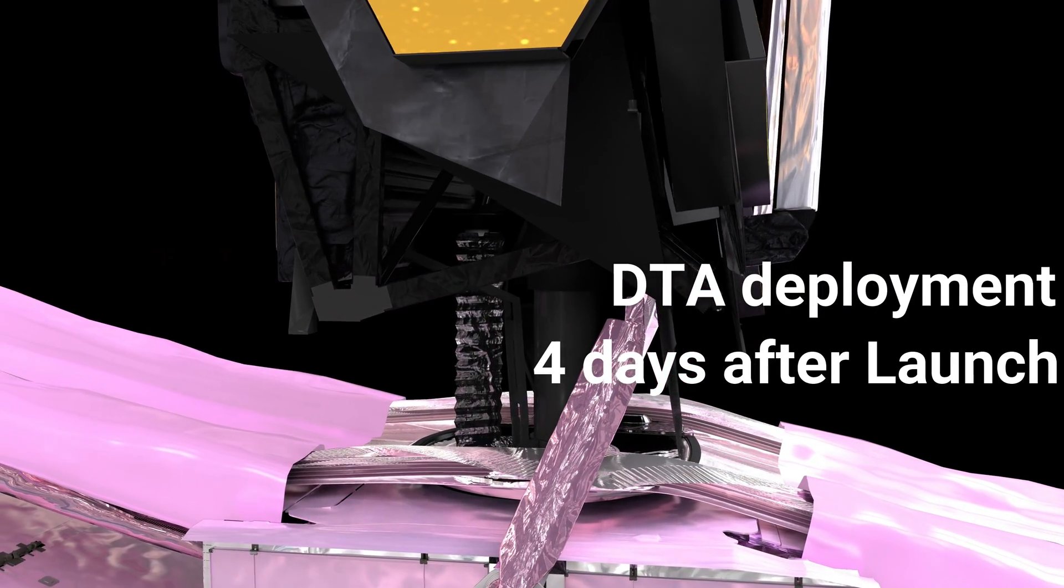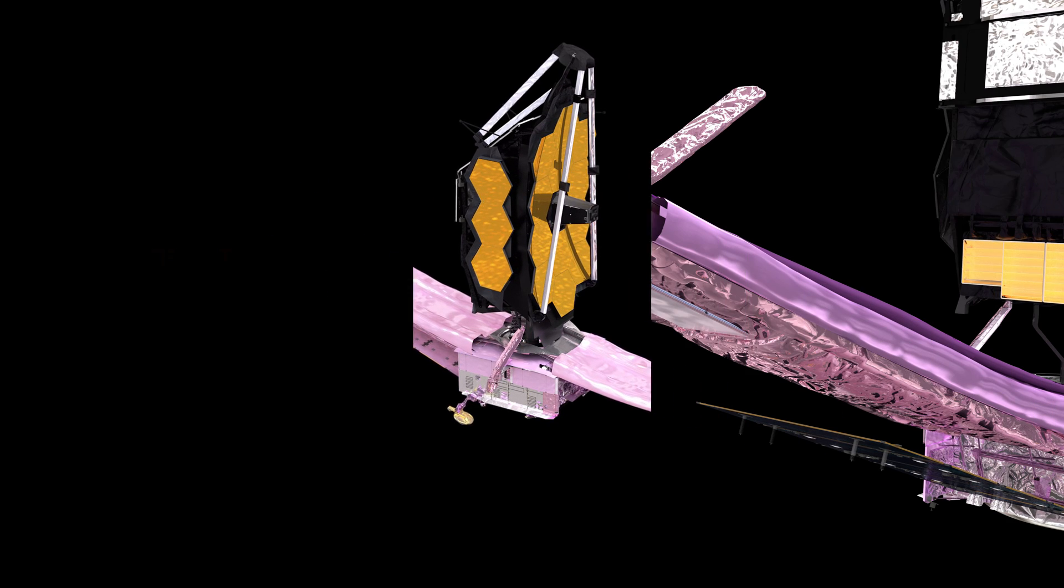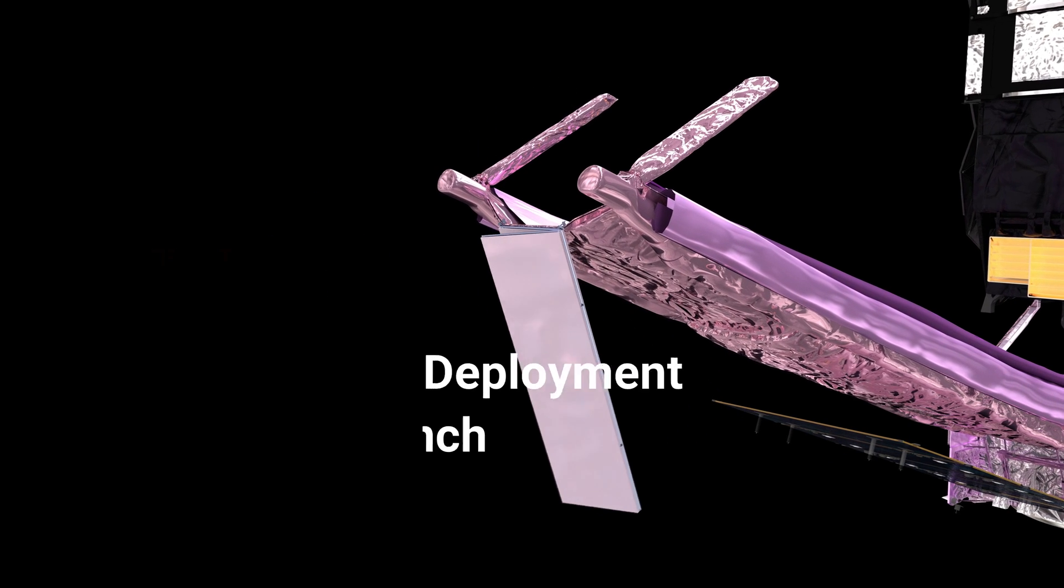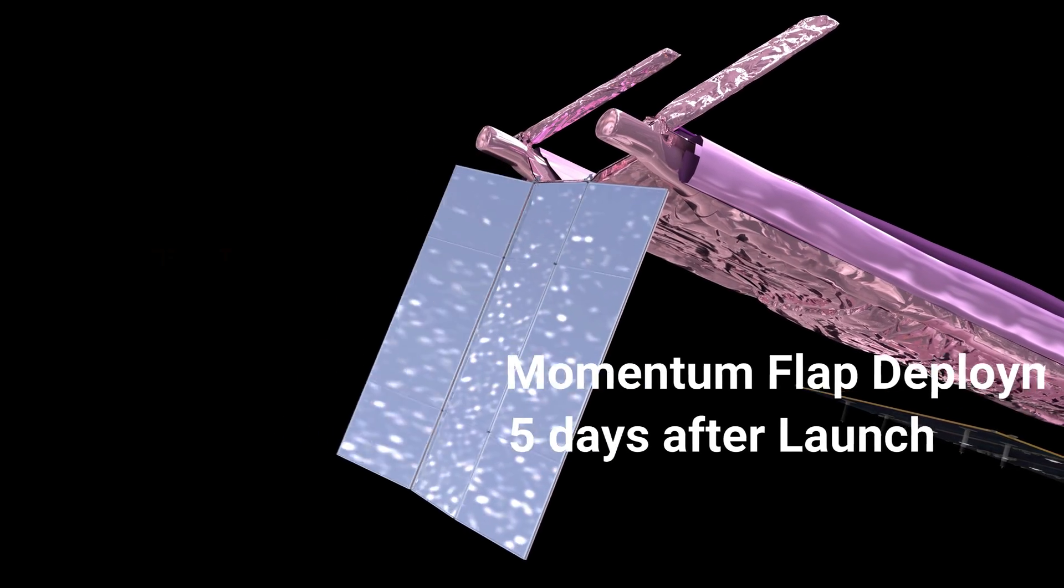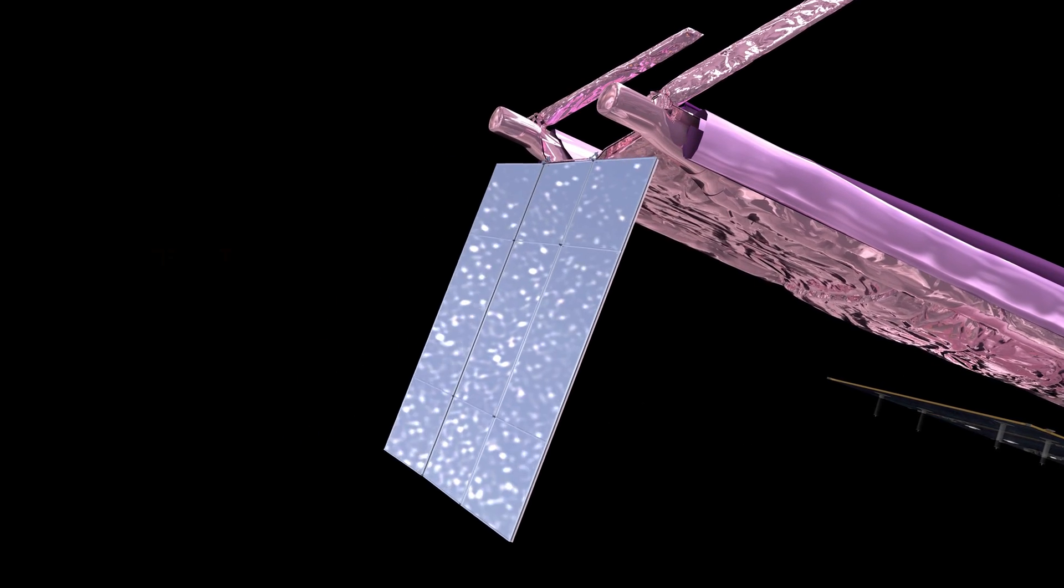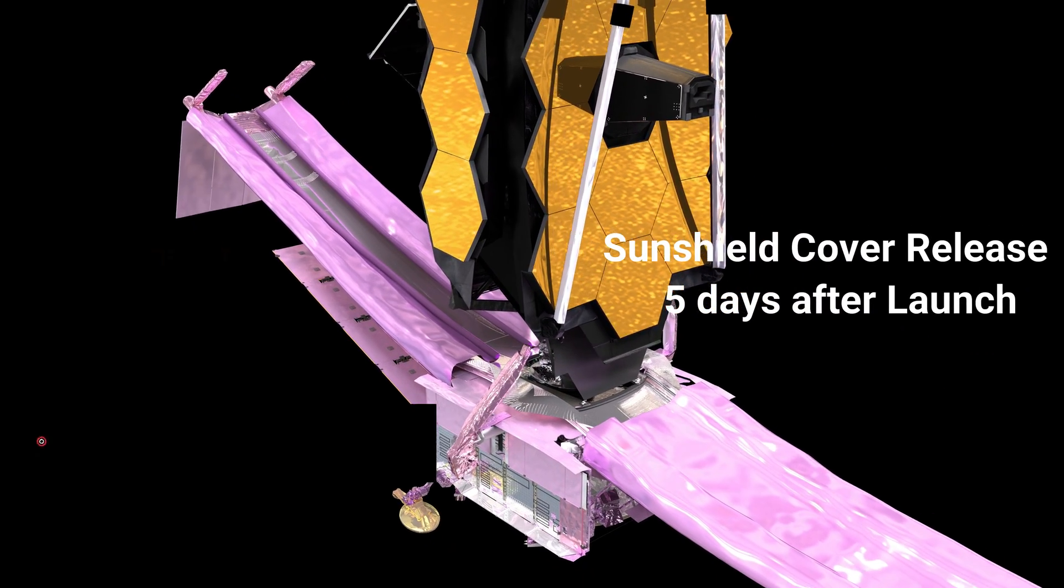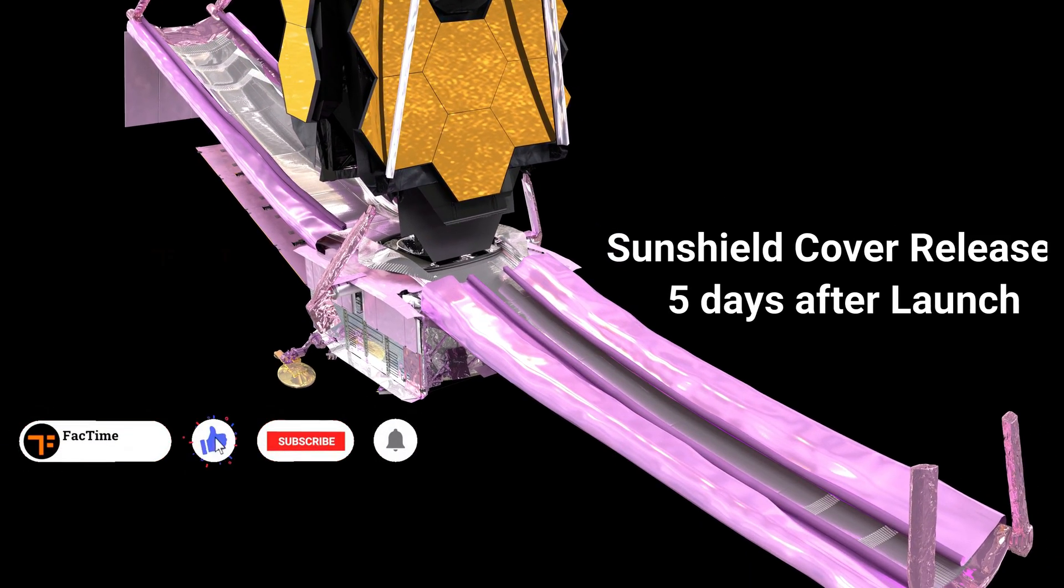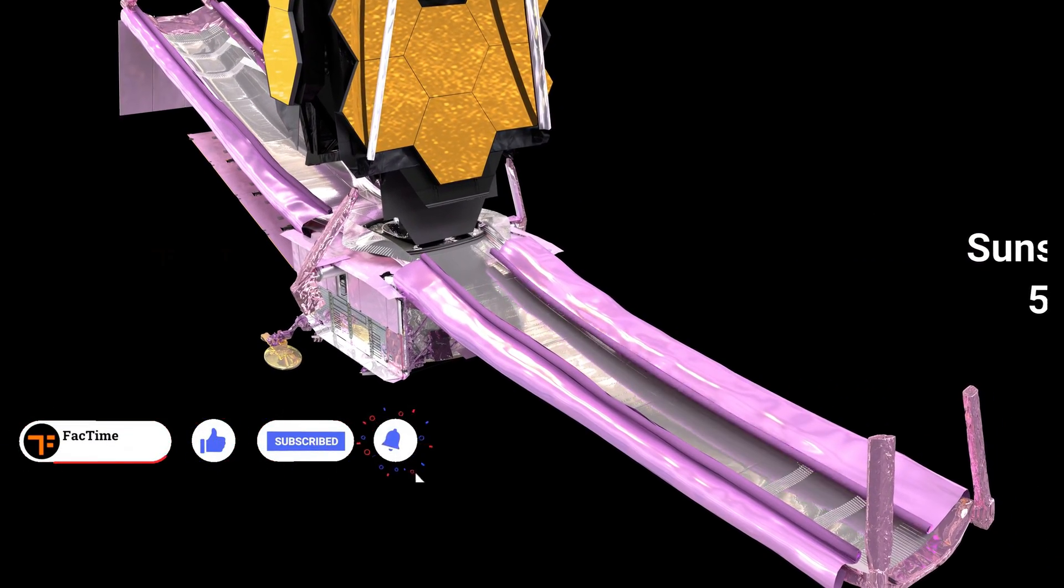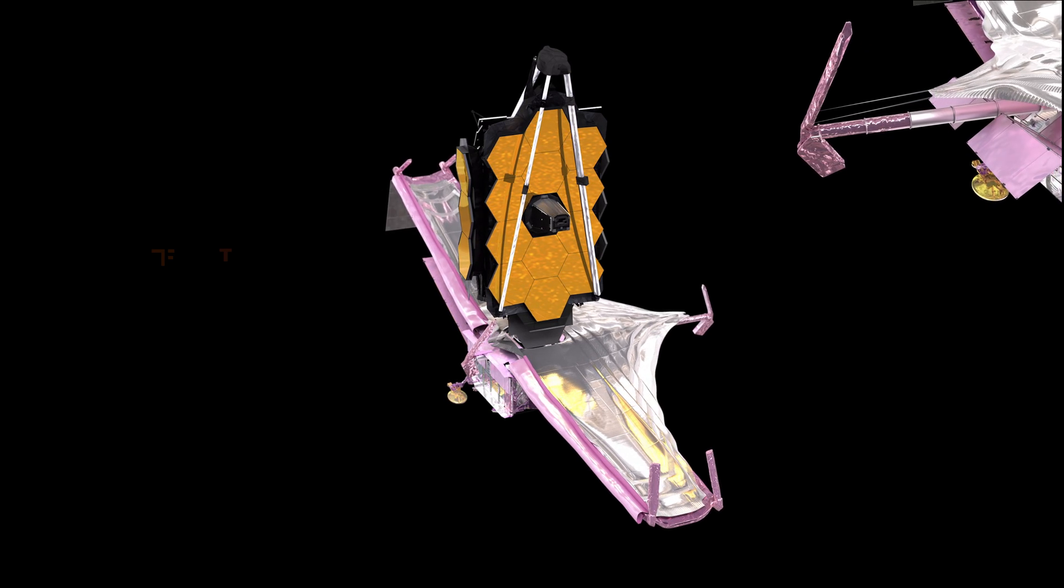Momentum flap deployment occurs five days after launch. This operation releases and rolls up the protective membrane cover. Sunshield cover release also occurs five days after launch.